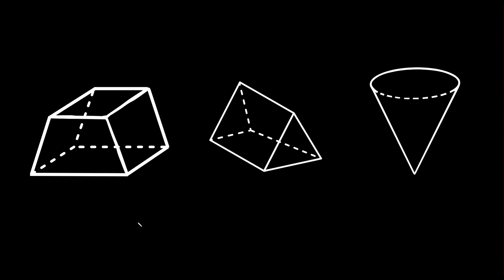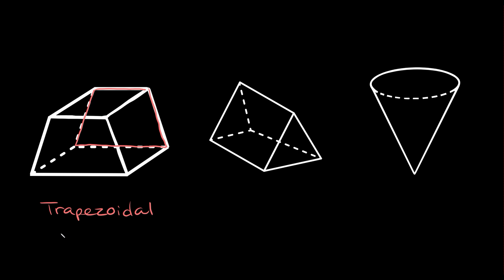Let's finish up with these last three. Starting on the left: no curved lines or shapes, all straight lines, so this is a polyhedron. We need to identify the faces or bases, especially if they're congruent. We do have two congruent faces here — they're on the sides. It would be this trapezoid right here, congruent with the trapezoid in the back. Since we have two congruent trapezoidal faces, this is called a trapezoidal prism.